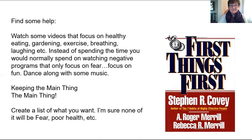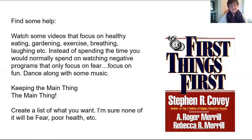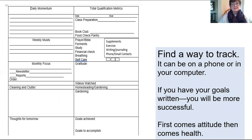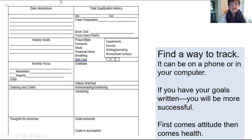As Stephen Covey says, keeping the main thing the main thing — that's really what you're trying to accomplish. Create a list of what you want. Do you want a healthier lifestyle? How does that look to you? This is called a daily momentum sheet. Every day I print off a new sheet — actually a week's worth of sheets to save time. Every day I fill it out, put the date in, put my goals. I have two goals and I list what my classes are — you can change this up.